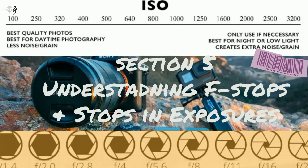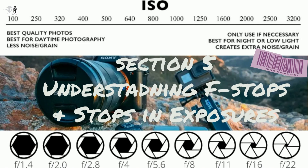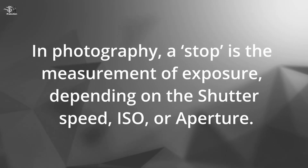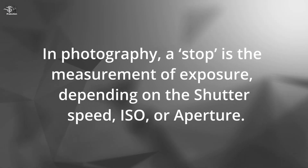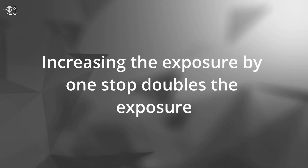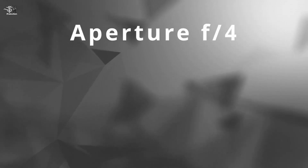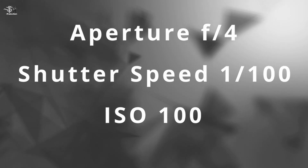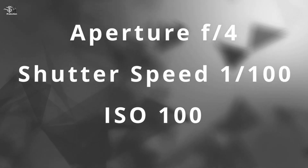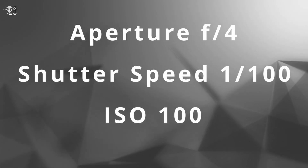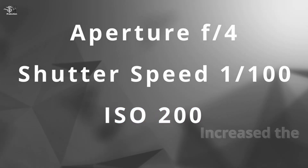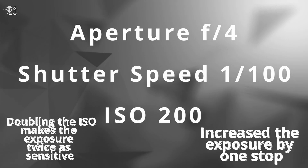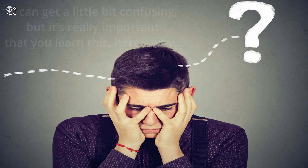Section 5: Understanding f-stops and stops in exposure in photography. A stop is the measurement of exposure depending on shutter speed, ISO, and aperture. Increasing the exposure by one stop doubles the exposure. For example, if your aperture is f4, shutter speed is 1/100, and ISO is 100, and you keep the aperture and shutter speed the same but increase the ISO to 200, you have increased the exposure by one stop. Doubling the ISO makes the exposure twice as sensitive.